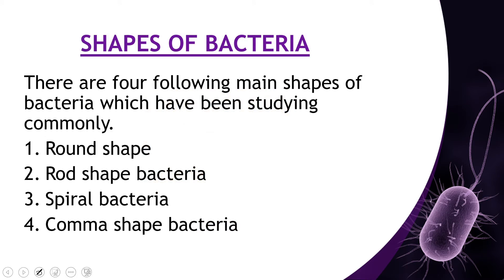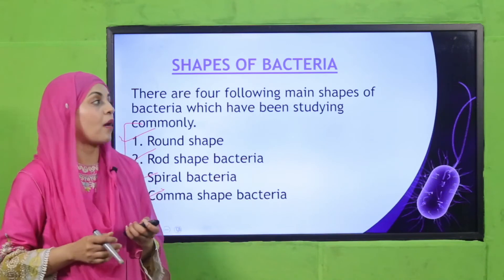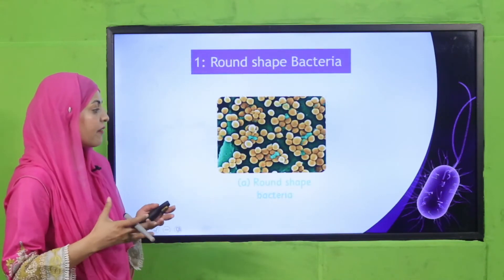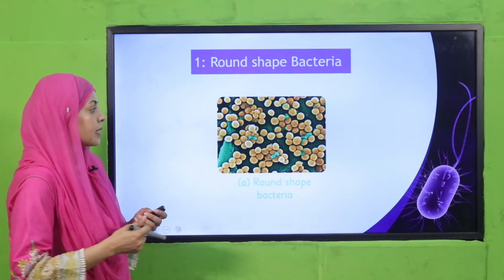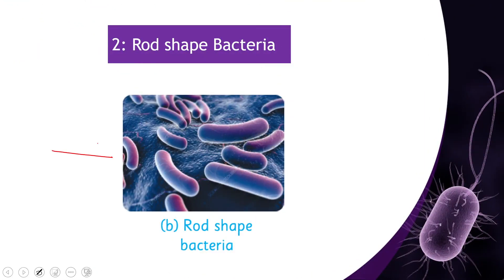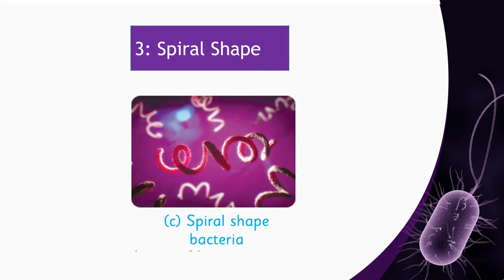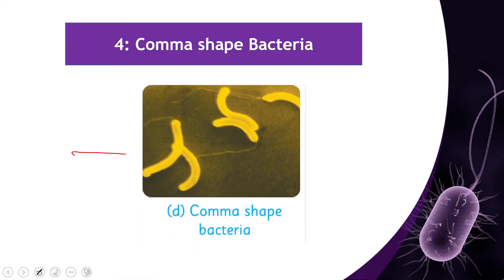So these are the shapes of bacteria: round, rod, spiral, and comma. If you look at bacteria under a microscope, you can see these shapes. Here is the round-shaped bacteria, this is rod-shaped bacteria, this is spiral-shaped bacteria, and this is comma-shaped bacteria — four shapes of bacteria that we have studied.